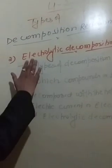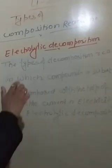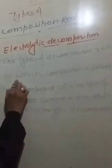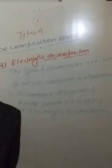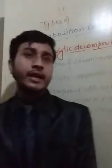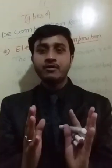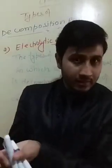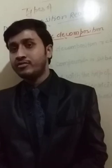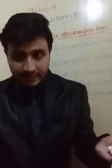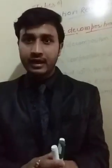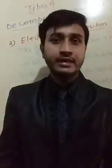The next category is electrolytic decomposition. The type of decomposition reaction in which a compound or substance is decomposed with the help of electric current or electricity is called electrolytic decomposition. Any substance which is decomposed with the help of electric current, or by the passing of electricity, is known as electrolytic decomposition.